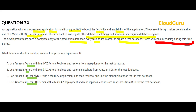Option A uses Aurora with Multi-AZ deployment replicas and restores from snapshots for the test database, but it doesn't clarify where the restore comes from — it doesn't solve the problem. Option B uses Aurora replicas but restores snapshots from RDS, which is inconsistent — if your data is in Aurora, why restore snapshots from RDS? So both A and B using Aurora are ruled out.